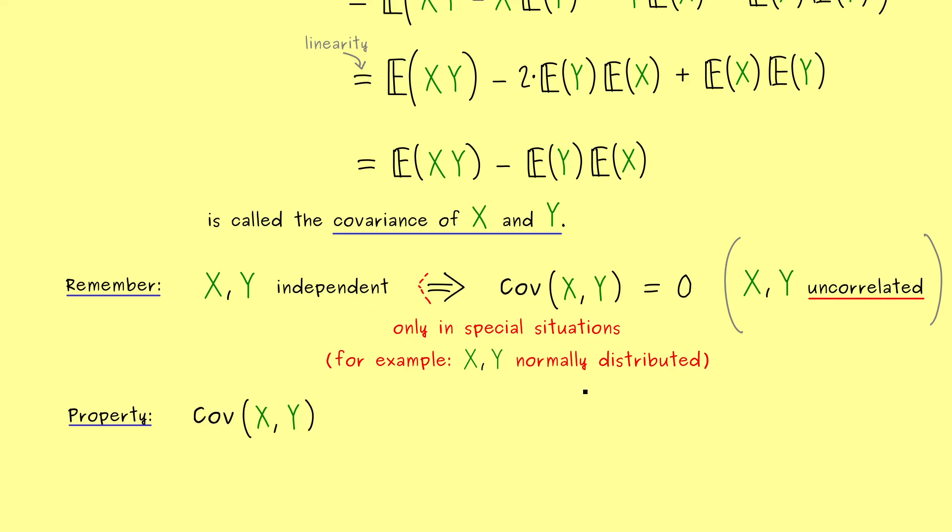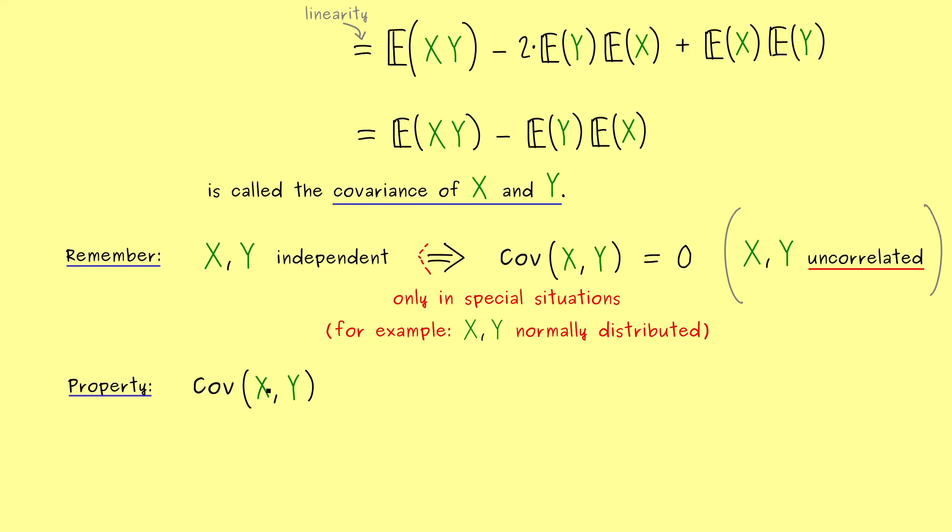Okay, then back to this property here, and maybe you have already noticed, the covariance is nothing else than the variance, if we put in the same random variable. Therefore, we can answer the following question, what is bigger, the covariance squared or the two variances multiplied?